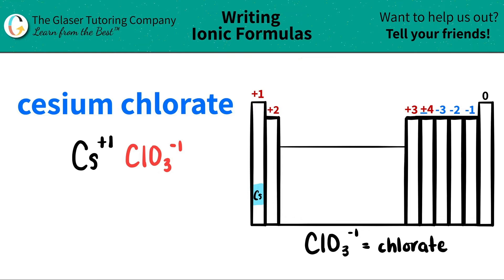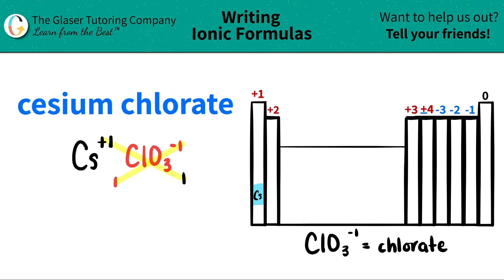Now since you have both components, we do this little trick where we take the charges and we crisscross them to see how many of each component we need. So this plus one crisscrosses down telling me that I need one chlorate. And then this negative one crisscrosses down telling me that I need one cesium. When you do this crisscross, don't worry about the charges anymore — you're just looking at the subscripts below. And don't bring the positives or the negatives, just bring down the number.